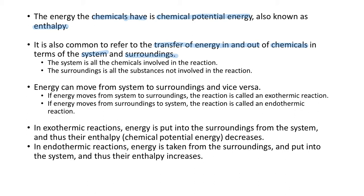The system is where the chemicals are involved — that can be reactants or products. The surroundings is all the substances not involved in the reaction but are just around. For example, if you have a reaction occurring in a test tube, the glass of the test tube might be considered the surroundings. If the reaction occurs in aqueous solution, the water is counted as part of the surroundings, even though the reaction is happening within the atoms or ions within the water.